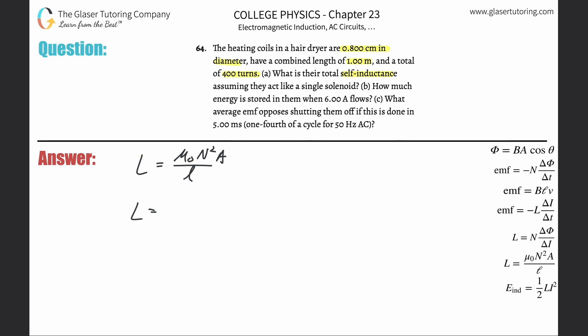The permeability of free space is 4π times 10 to the minus 7th—we've seen that before. The total number of turns here is 400. You've got to square it.